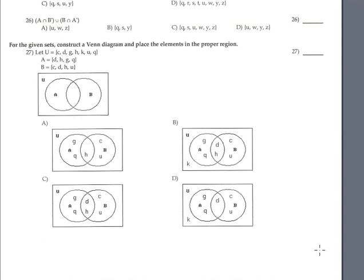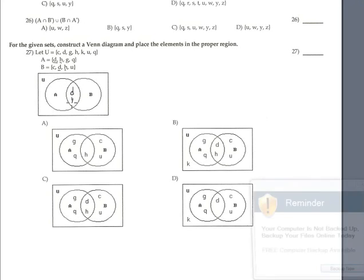Problem 27: control the Venn diagram and place the elements in the proper region. The most important step is finding the common elements between A and B, which are D and H. Therefore, in the intersection region we have D and H.